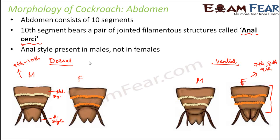So the important features of the abdomen are that it has well-segmented parts, and the genital parts — both male and female sex organs — are present in the abdomen. We will discuss their structure in more detail when we talk about the reproductive system of cockroach.